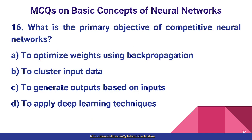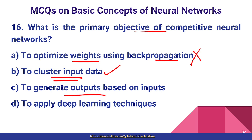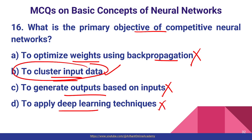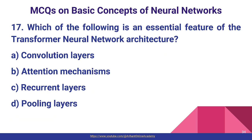Question number sixteen: what is the primary objective of a competitive neural network? The primary objective is to cluster the input data. It is not to optimize weights using backpropagation, generate output based on input, or apply deep learning techniques. Option B — to cluster input data — is correct.